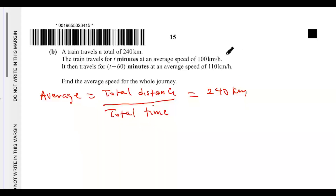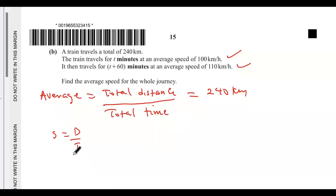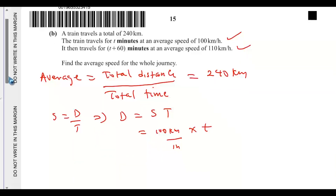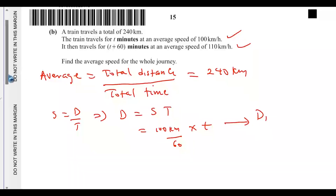We need to find the total time taken. Using distance equals speed times time, for the first leg: d1 = (100 ÷ 60) × t. The time t is in minutes, so we convert the speed from per hour to per minute by dividing by 60.